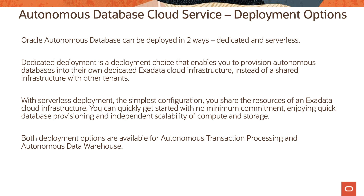Autonomous database can be deployed in two ways: dedicated and serverless. Dedicated deployment enables you to provision autonomous database into its own dedicated Exadata cloud infrastructure instead of a shared infrastructure with other tenants. Customers log into the OCI console, provision an Exadata infrastructure, and once provisioned, create container databases and then deploy the autonomous database.